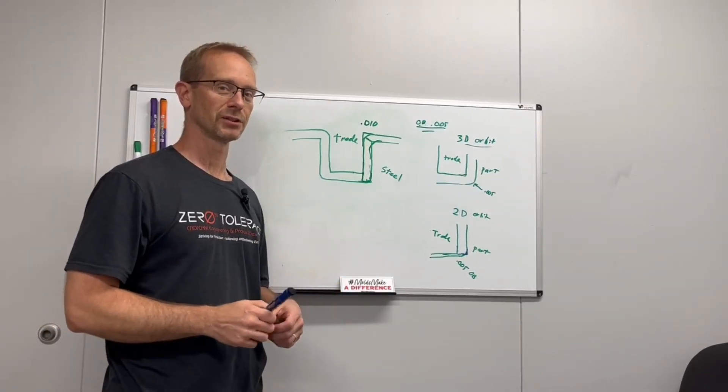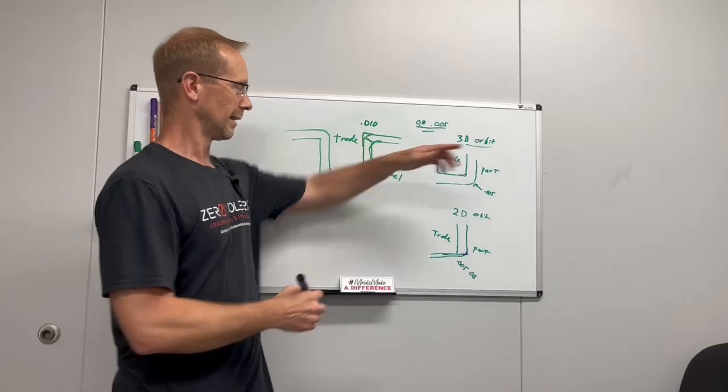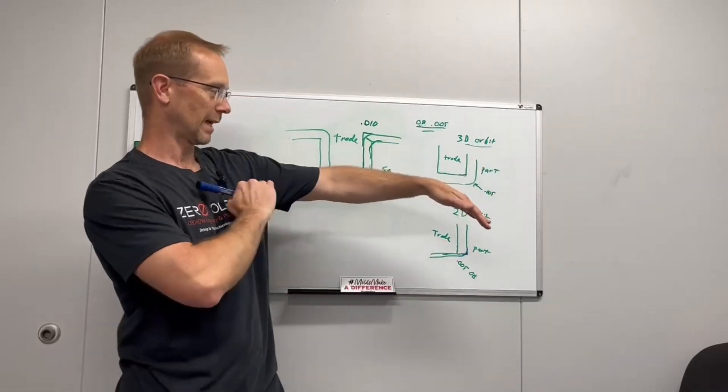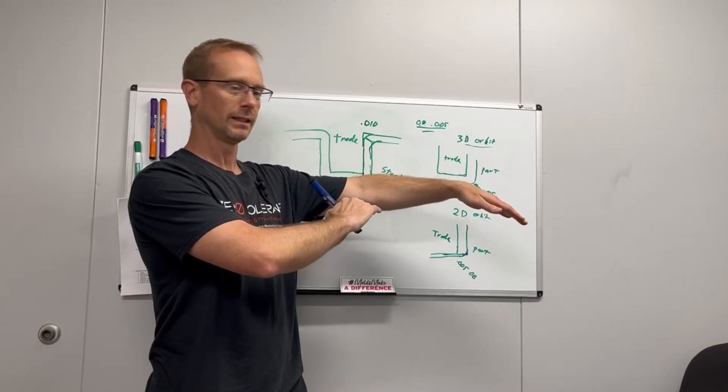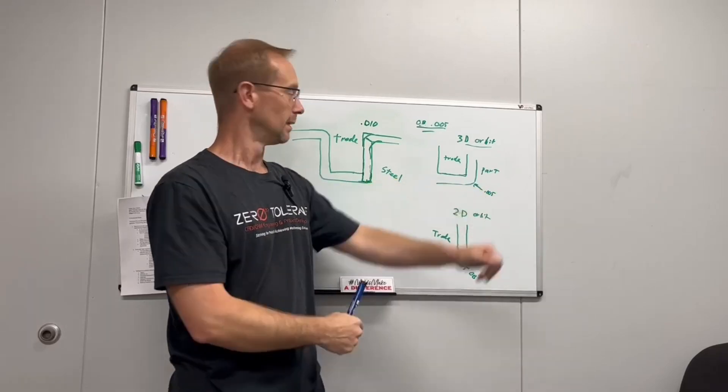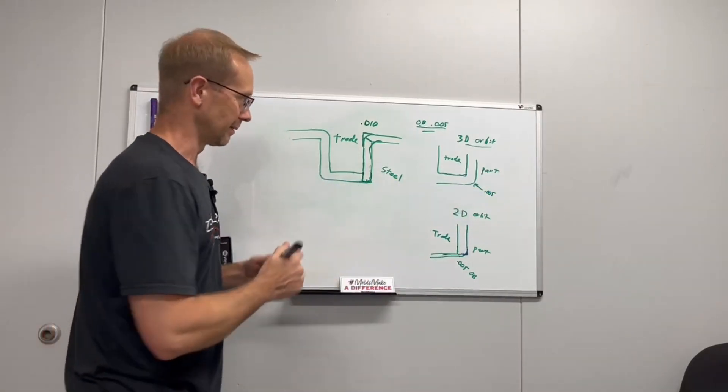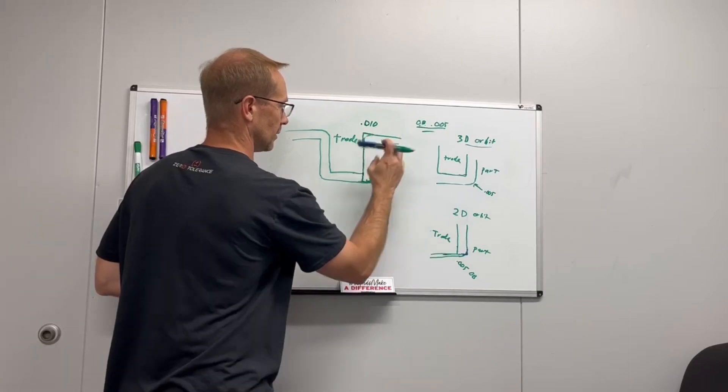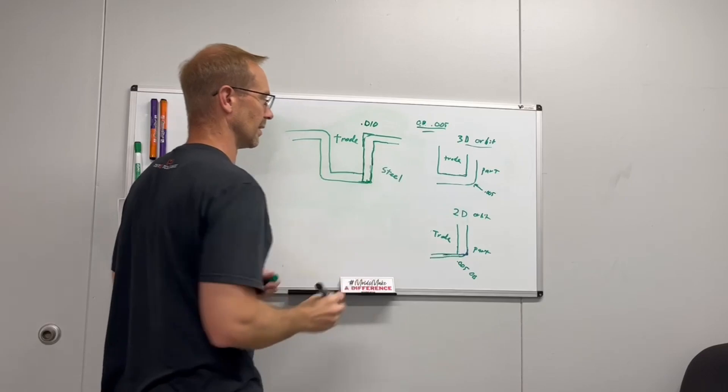One thing I do want to mention also is this little area right here, I'm going to call it the armpit of EDM, is when the trode actually has to overhang a horizontal area. And it's going to be burning on that top surface as well as the side and bottom. We call it the armpit. So this area here is the armpit, and let me show you what my problems I have with it.